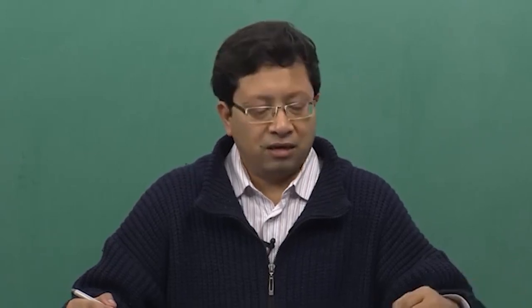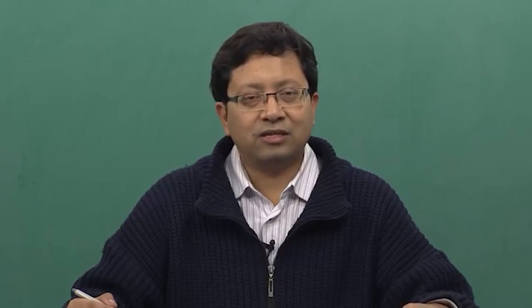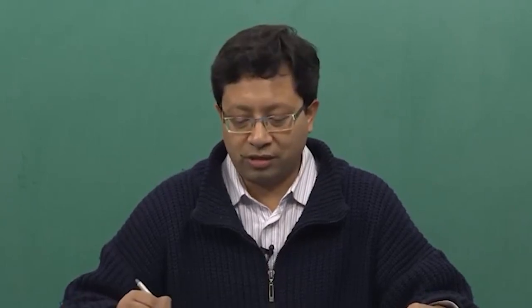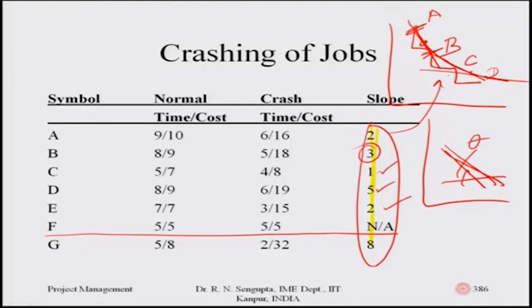For activity A with a non-linear cost, each one-day reduction increases cost by a different amount. It will be minimum for reduction from D to C, increase further as it is crashed from C to B, and reach its maximum value when crashed from B to A. The corresponding values can be found if data is given, and the same logic applies for activities B, C, D, and all others.